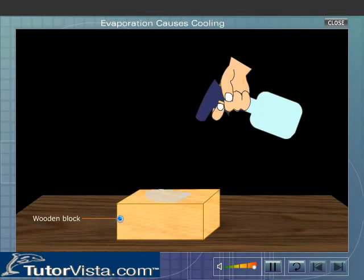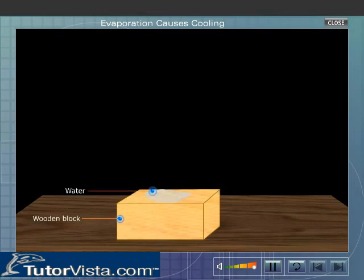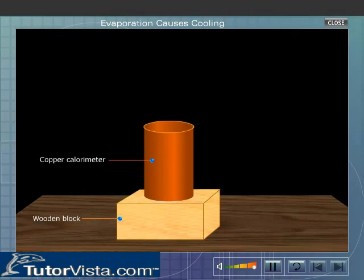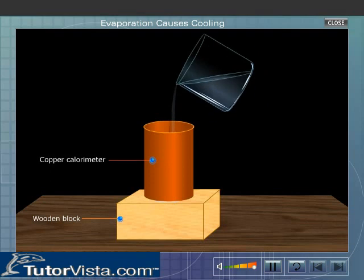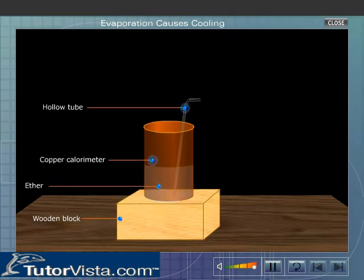Take a wooden block and sprinkle some water over it. Now place a copper calorimeter over it. Take some ether in the calorimeter and dip a hollow tube into it as shown.